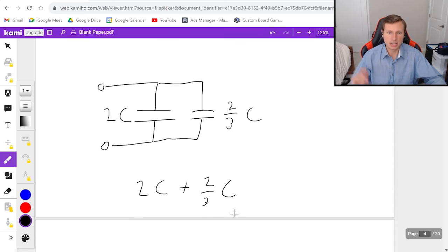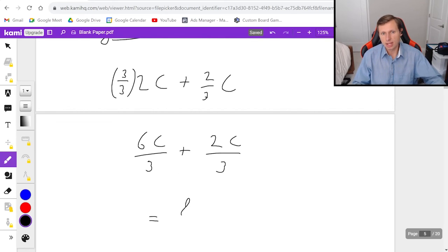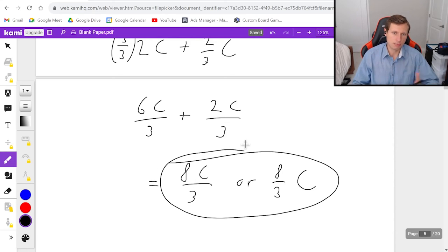Oh no, I need a common denominator again. Don't panic. I'm just going to multiply this by 3 over 3. It's going to be 6C over 3 plus 2C over 3, giving me a final answer of 8C over 3, or 8 thirds C. And this really can't be simplified any more than that. So this is our final answer there.